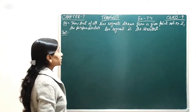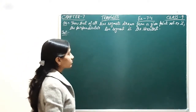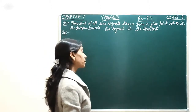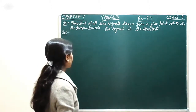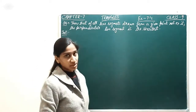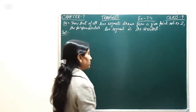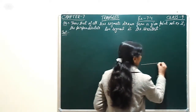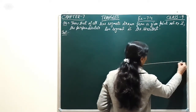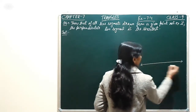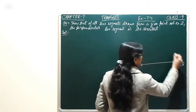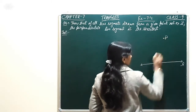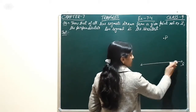Show that of all line segments drawn from a given point not on a line, the perpendicular line segment is the shortest. That means, we have a line here, L, and a point P which is not on the line L.